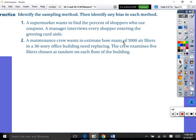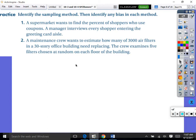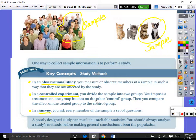A maintenance crew wants to estimate how many of 3000 air filters in a 30-story office building need replacing. The crew examines filters chosen at random on each floor of the building. That's random. But that's 3000 air filters. So they're wanting to know in general how are our air filters doing in this building. So would you say that has a bias? Nope. No bias. That one was random. It says they were randomly selected, not every third.